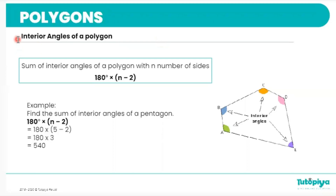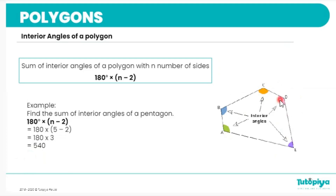We can find the sum of interior angles of a polygon using the formula 180 × (n − 2), where n is the number of sides. For a pentagon, n = 5, so 180 × (5 − 2) = 180 × 3 = 540 degrees. For an irregular pentagon we cannot define each angle exactly, but for a regular pentagon we can find each angle by doing 540 ÷ 5, giving each interior angle a magnitude of 108 degrees.